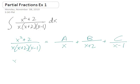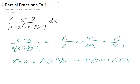And if we clear the denominators by multiplying by x times x plus 2 times x minus 1 on both sides, we get x squared plus 2 equals A times x plus 2 times x minus 1 plus B times x times x minus 1 plus C times x times x plus 2.